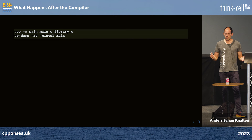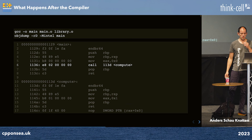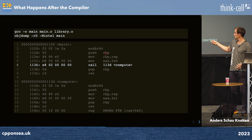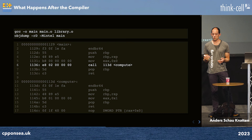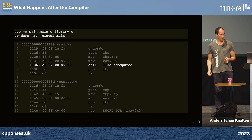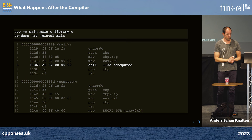If I take my multiple object files, link them into one executable called main, and dump it, we see main and compute. Here's the call to compute: E8 followed by 2, meaning a relative call of +2. So by the time we execute this, the instruction pointer is at 0x113B, we add 2, and we're at compute. The relocation has been resolved. If I swap the order of main.o and library.o, they'd be swapped in the output and you'd get a negative number again.